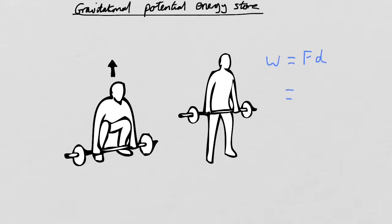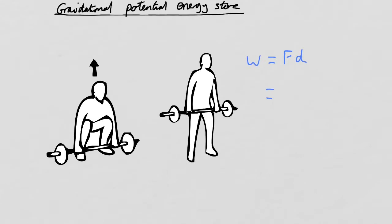From the forces topic you know that weight is given by mass times gravitational field strength. So mass times gravitational field strength is the force — that's the force of weight. And the distance that we lift the object is also known as the height, so we end up with the equation MGH: mass times gravitational field strength times the height that you lift the object.